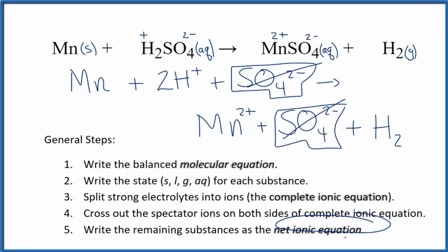And what's left, that's going to be the net ionic equation for Mn plus H2SO4. Let me clean it up and write the states in. We'll have our net ionic equation.